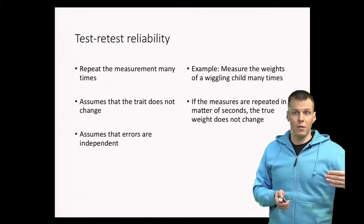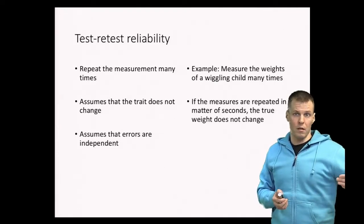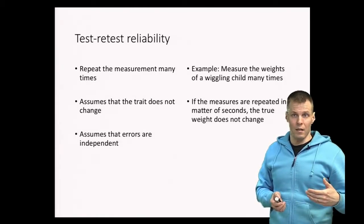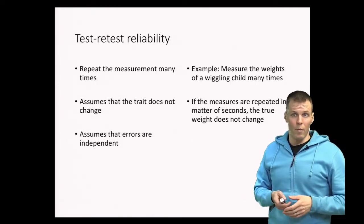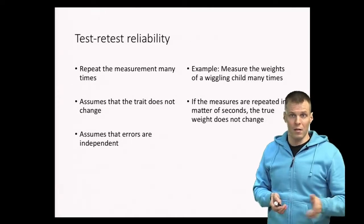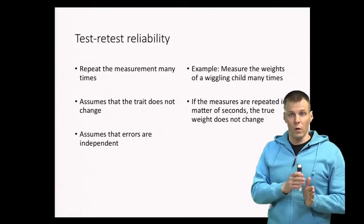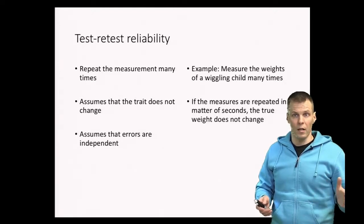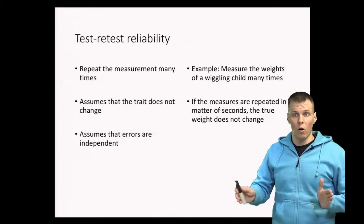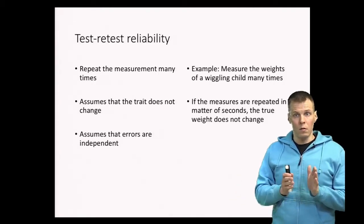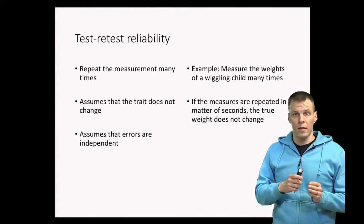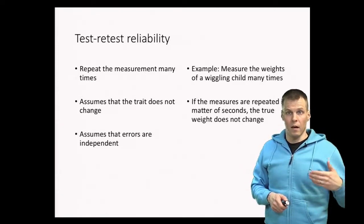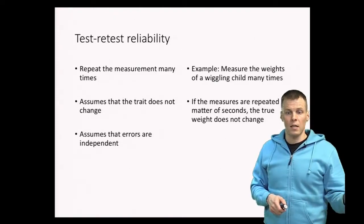An example: if we measure a child that wiggles and the measurements are done within seconds, the true weight does not change. We cannot argue test-retest reliability with, say, a one-year time delay. We can't measure a child at age five and again at age six and say the difference in weight is evidence of unreliability, because we cannot assume the trait is stable over such a long period. You have to consider how quickly the trait being measured changes over time and how quickly people reset by forgetting they were tested. That's test-retest reliability.